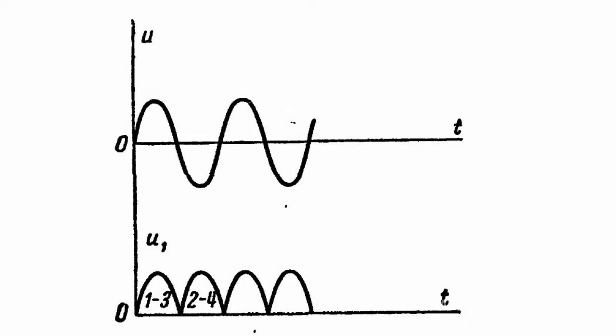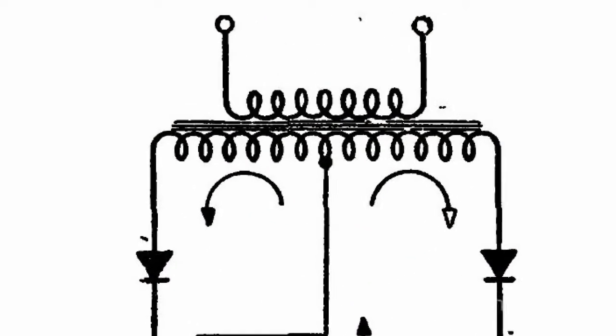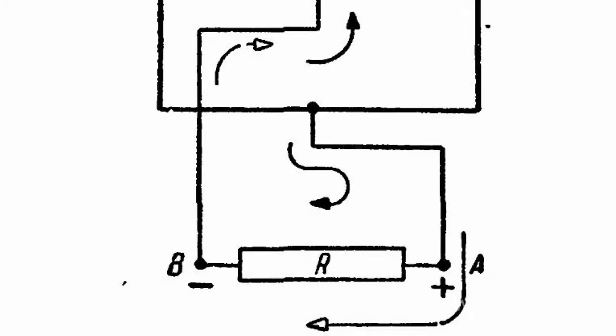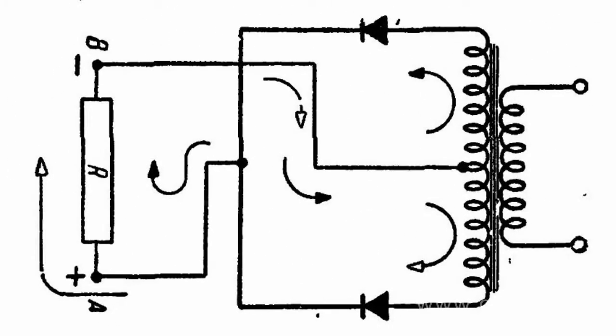Apart from that, there is a circuit with fewer rectifiers. It is used in cases where the secondary transformer coil has a midpoint tap from which the AC voltage comes. Such a circuit is actually a half-wave circuit repeated two times. Rectifiers operate in turns, and load current R always retains its direction. The voltage curve of the load coincides with the curve of a full-wave circuit.